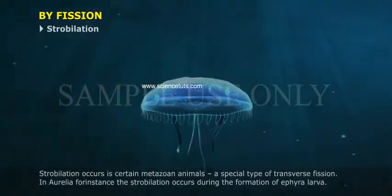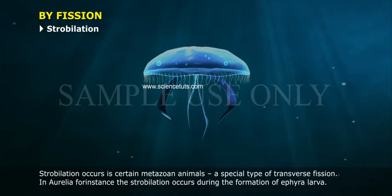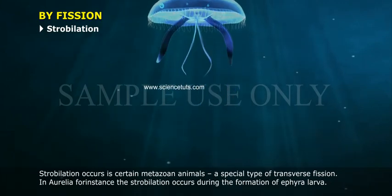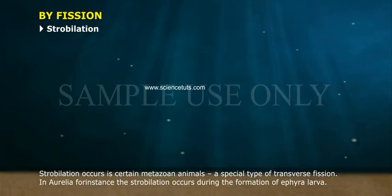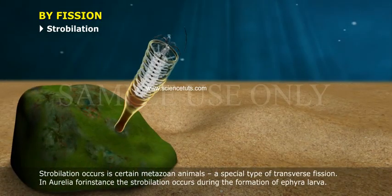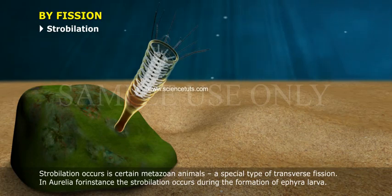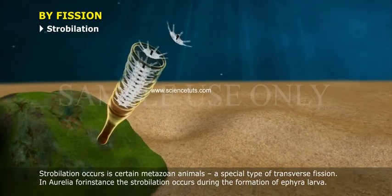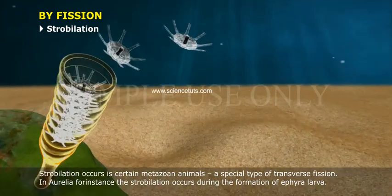Strobilation occurs in certain metazoan animals and is a special type of transverse fission. In Aurelia, for instance, strobilation occurs during the formation of the ephyra larva.